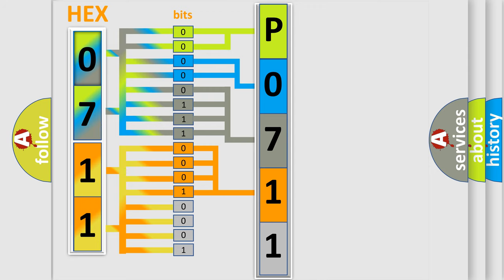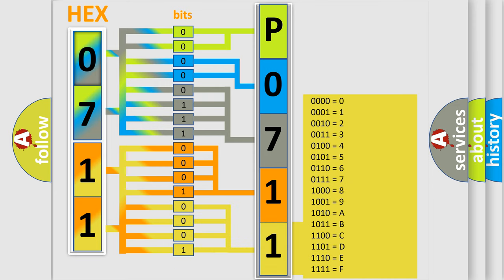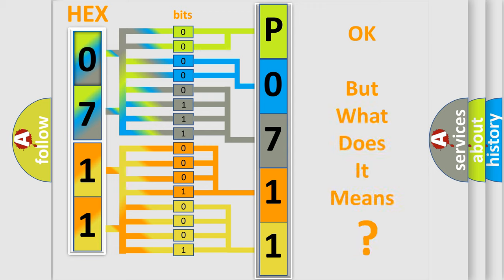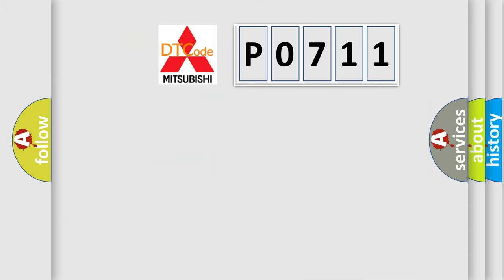A single byte conceals 256 possible combinations. We now know in what way the diagnostic tool translates the received information into a more comprehensible format. The number itself does not make sense to us if we cannot assign information about what it actually expresses.